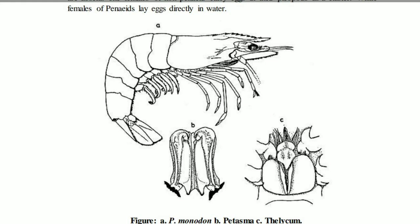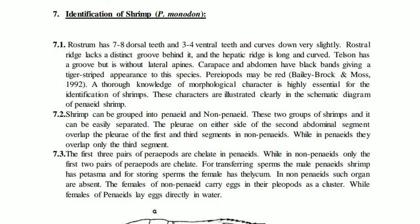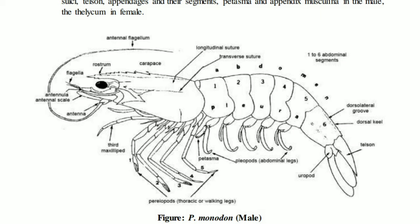Now we will look at shrimp reproductive organs: the petasma and the thelycum. The thelycum is the female reproductive organ of shrimp. The petasma is the male reproductive organ of shrimp. Here we will show the shrimp outline — specifically the male shrimp reproductive structure.